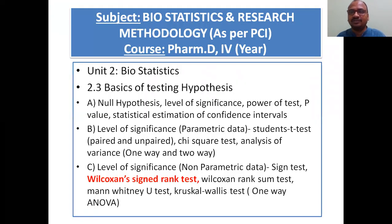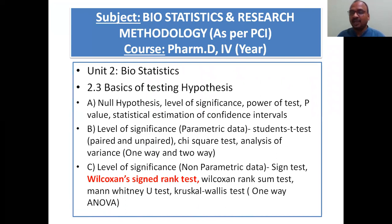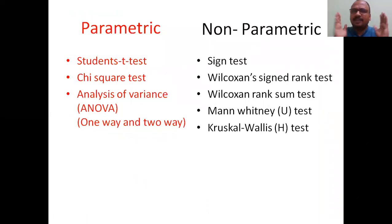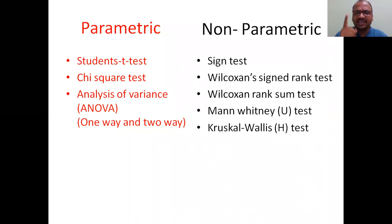This is the syllabus of your biostatistics. You can see the Wilcoxon signed rank test here. This is common for all pharmacy students, as per the PCI Pharm D fourth year course, but it is common for everybody — M-Pharmacy, B-Pharmacy, pre-PhD, PhD and all. This is a common slide covering parametric tests and non-parametric tests. The Wilcoxon signed rank test comes under non-parametric tests.